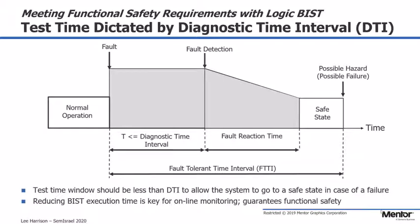When running in-system logic BIST periodically, the design architect is focused on the FTTI — the Fault Tolerant Time Interval — which is the time between a defect occurring in the device and the device being put into a safe state. There are two parts to the FTTI: the DTI, which is the time it takes for the defect to be detected (in the case of logic BIST, this is the logic BIST test time), and the reaction time — how long the system takes to respond and put the device into a safe state. An example could be any ADAS feature which develops a fault, where the FTTI is the time it takes to safely disable that feature and notify the driver.